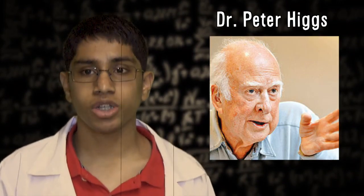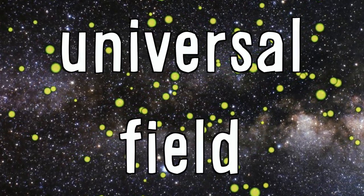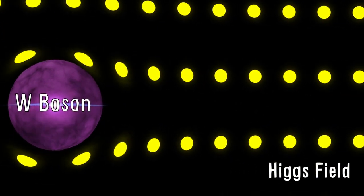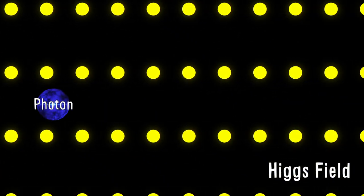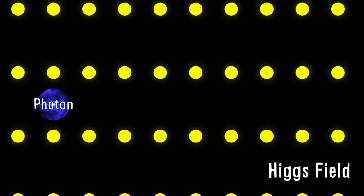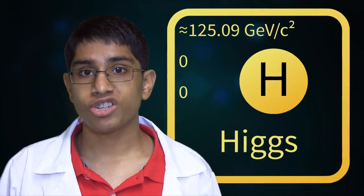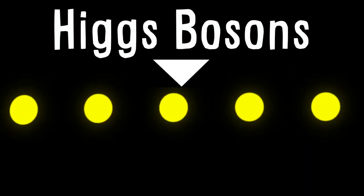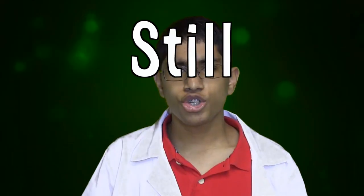In the 1960s, Dr. Peter Higgs and his team postulated that a universal field, permeating space, gave mass to all elementary particles based on how much they interacted with it. The W and Z bosons interact a lot with the Higgs field and gain mass, while particles such as photons don't interact with the field at all and thus are massless. This field is accompanied by the Higgs boson, which the field uses to interact with the particles.